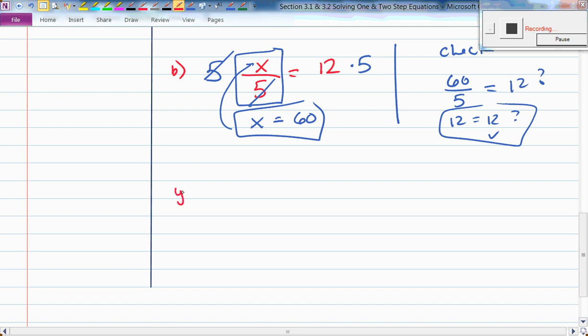I'd like to challenge you for a you try right here. If I were to give you 3 fifths x equals 6, what would you do in this particular case? What are we doing to our variable x? We're multiplying it by 3 fifths. So what's the inverse of multiplying by 3 fifths? Dividing by 3 fifths. Is that correct?